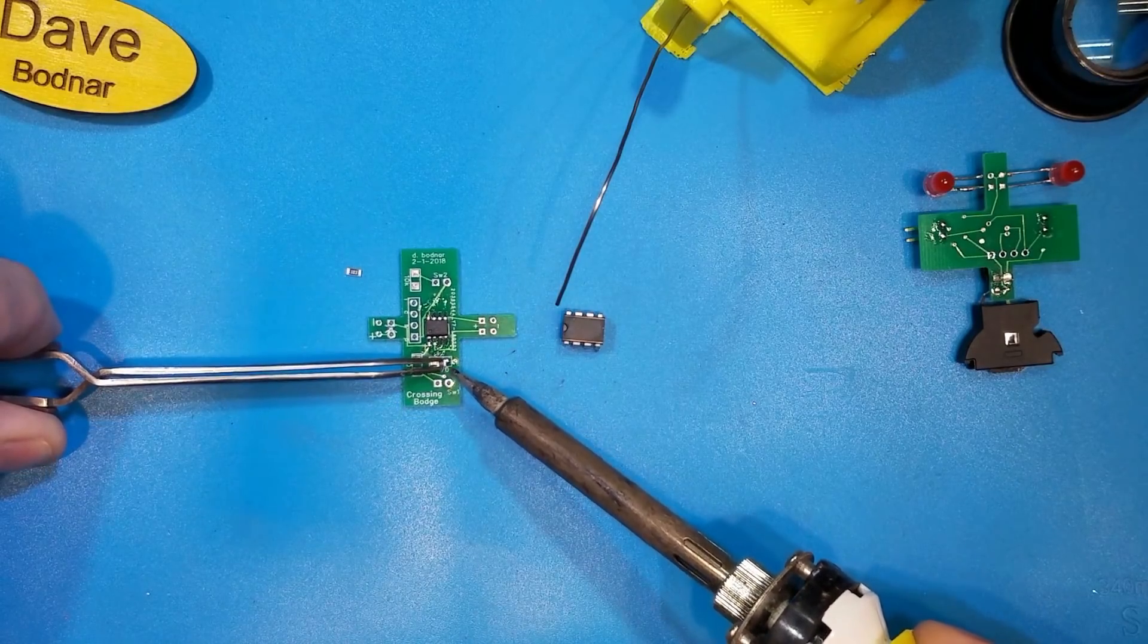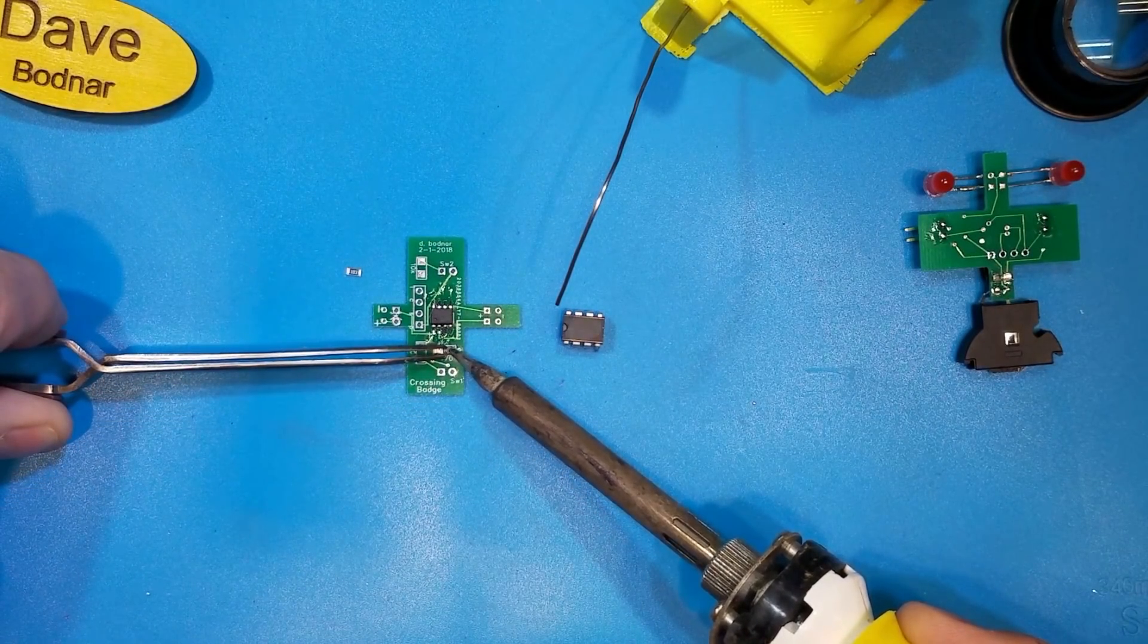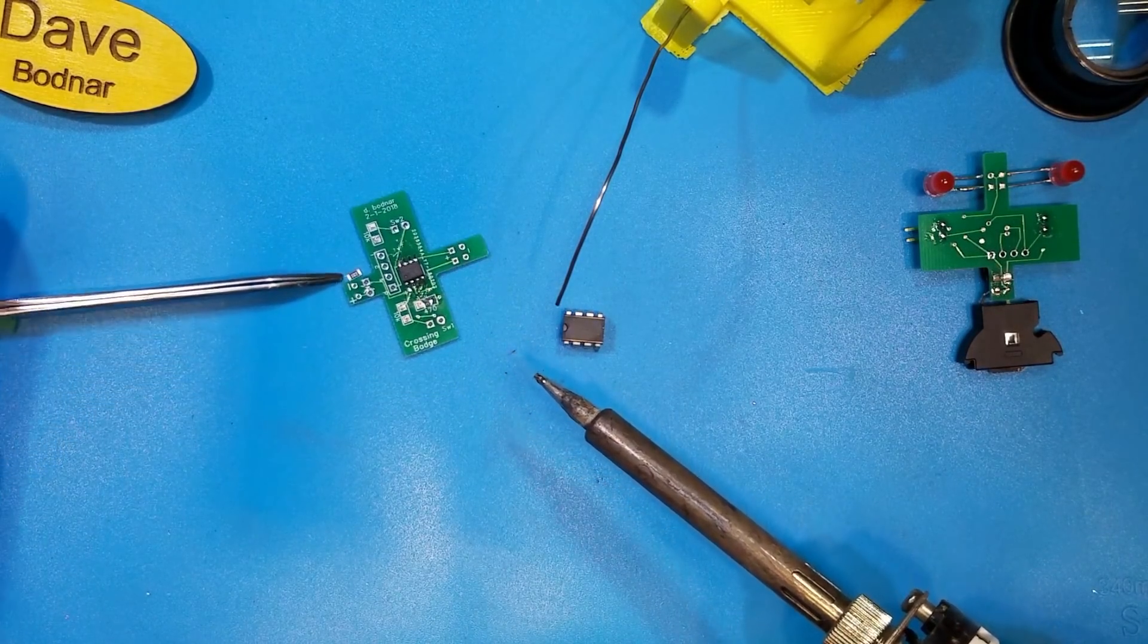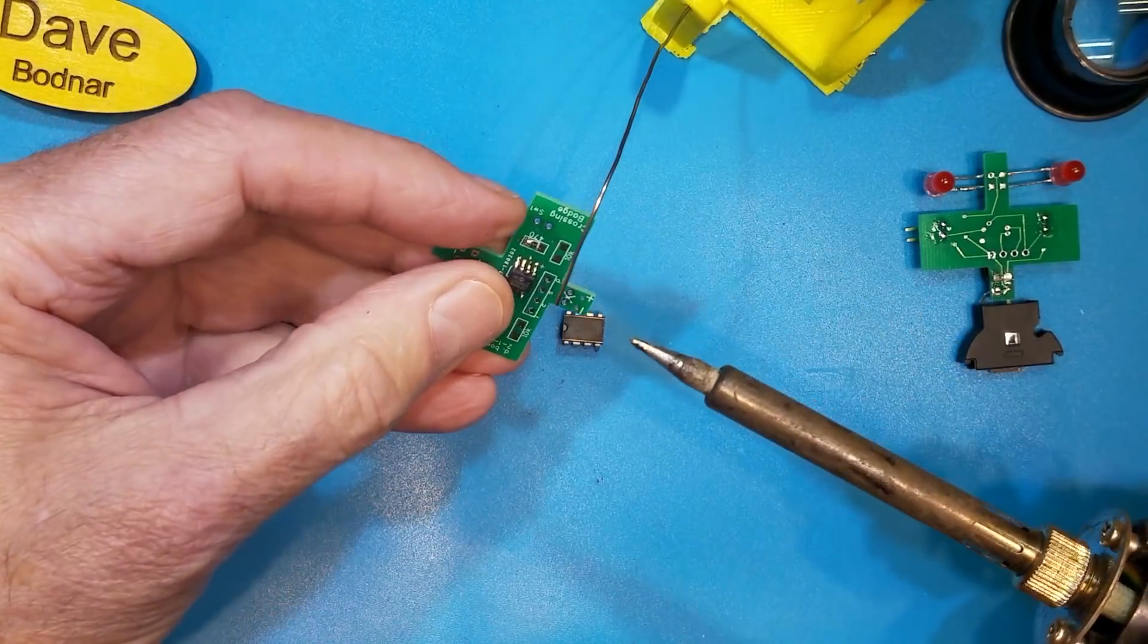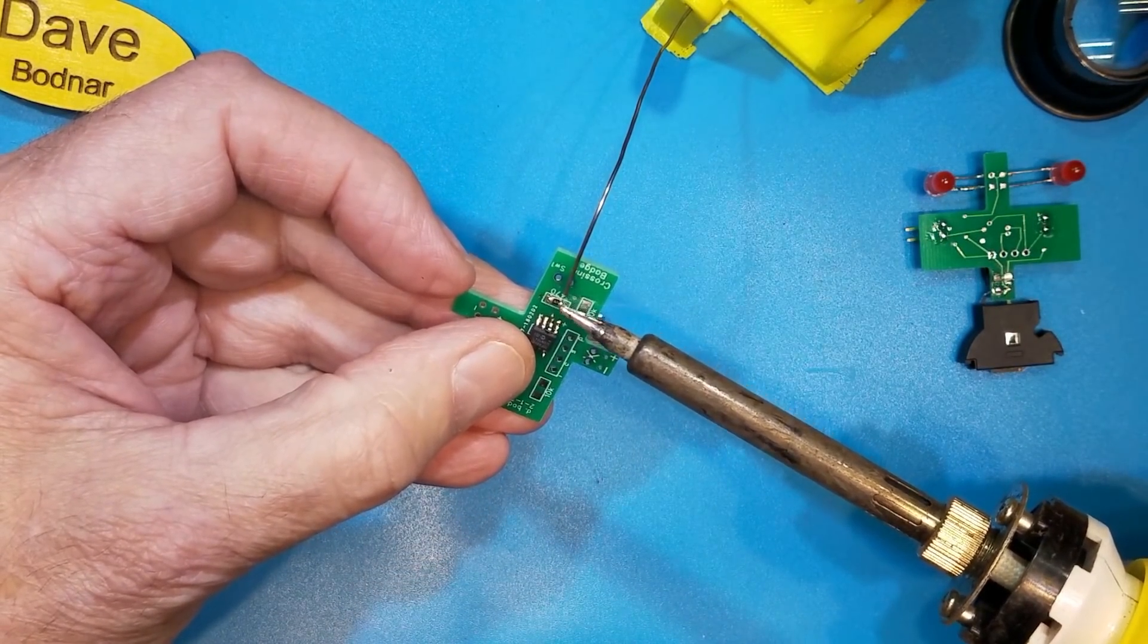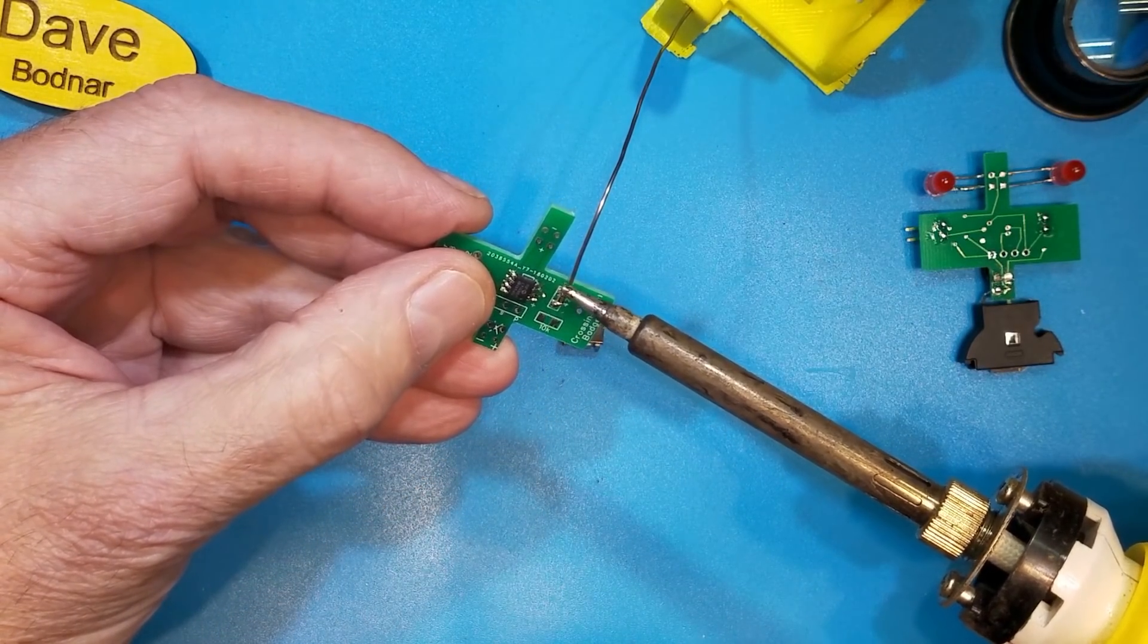I didn't have it quite hot enough. Let me add a little bit more solder. There we go. Now I can let go and it's going to stay. Now I can go to the other side of the resistor and solder that side. And just to be sure, I'm going to put a little more solder on the top.